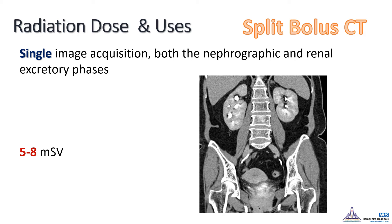Recently, the split-bolus CT came out. It relies on injecting half of the contrast, waiting 8 minutes, then injecting the other half, and taking a single scan after that. In a series of images, the patient will have a nephrogenic phase and a delayed secretory phase, and this decreases the radiation exposure to only 5–8 mSv.